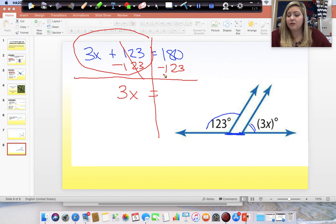This cancels and I'm left with 3x is equal to 180 minus 123. Get out your calculators. You can use it on this. Okay? So, 180 minus 123 gives us 57.